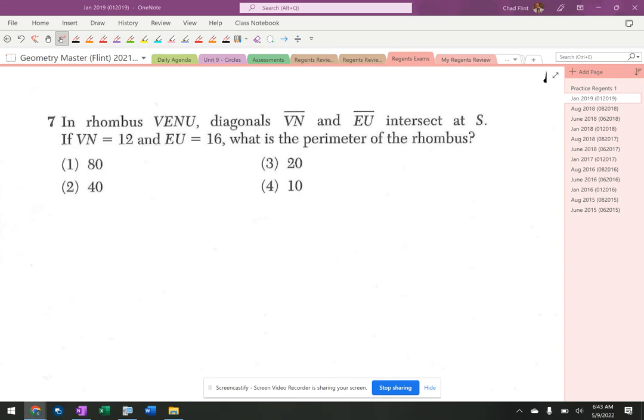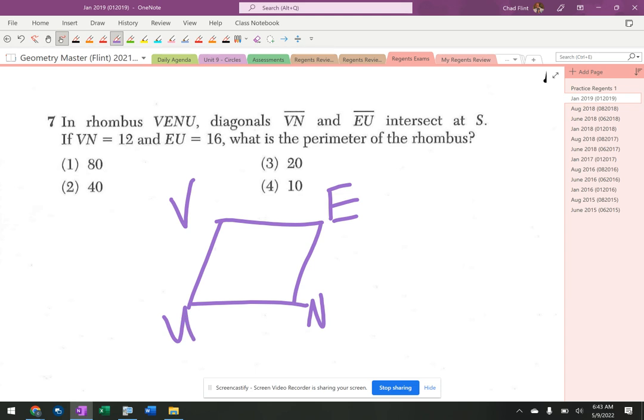So these questions have become more and more common. They do not draw the rhombus for you. So we draw a rhombus - doesn't need to be a beautiful rhombus. V, E, N, U. Remember the important part there is not where you start but that you go continuously around the outside.